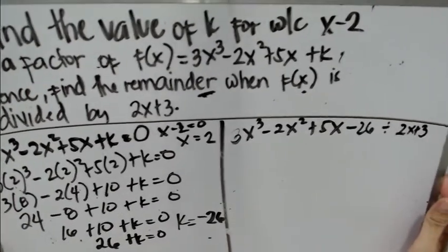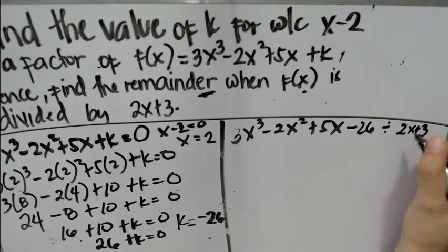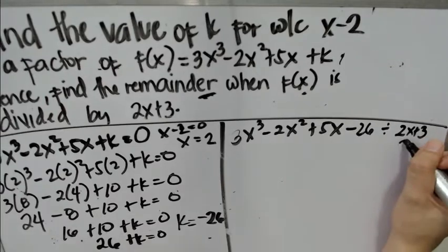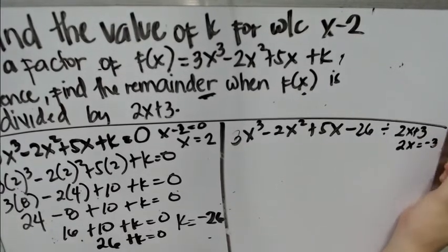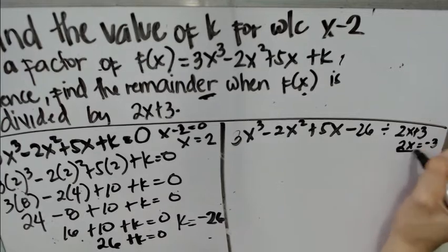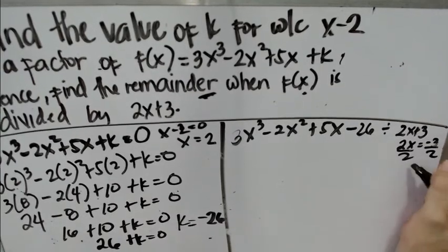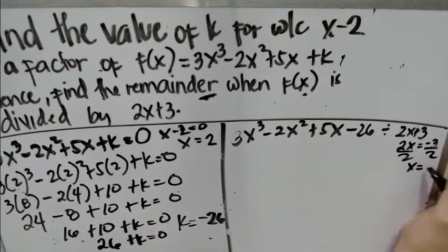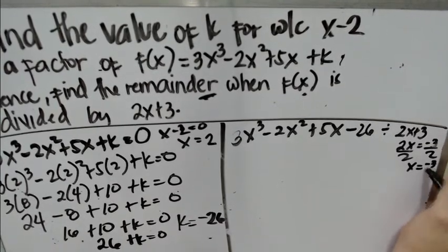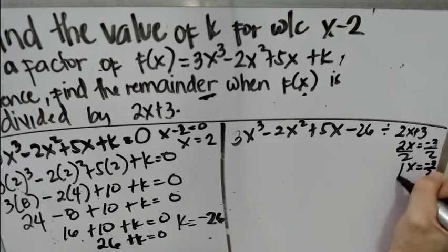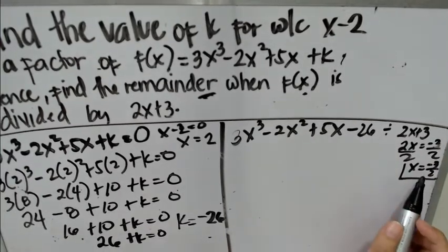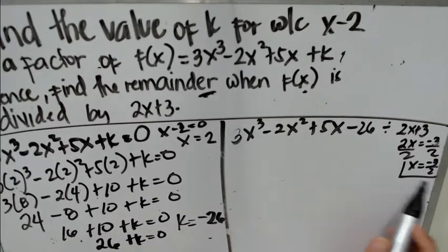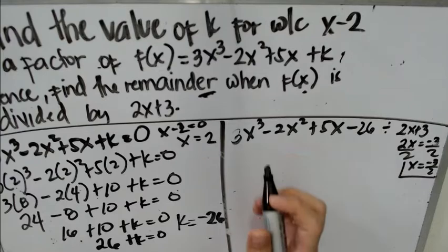We are going to divide it by 2x plus 3. We equate 2x plus 3 to 0, so 2x equals negative 3. We transpose 3 to the other side and divide both sides by 2, giving us x equals negative 3 over 2. Next, we substitute every x with negative 3 over 2.